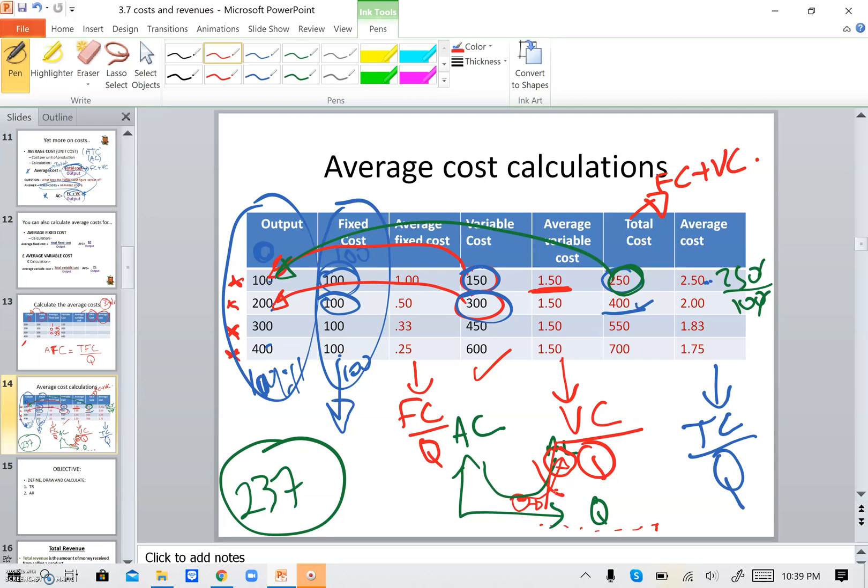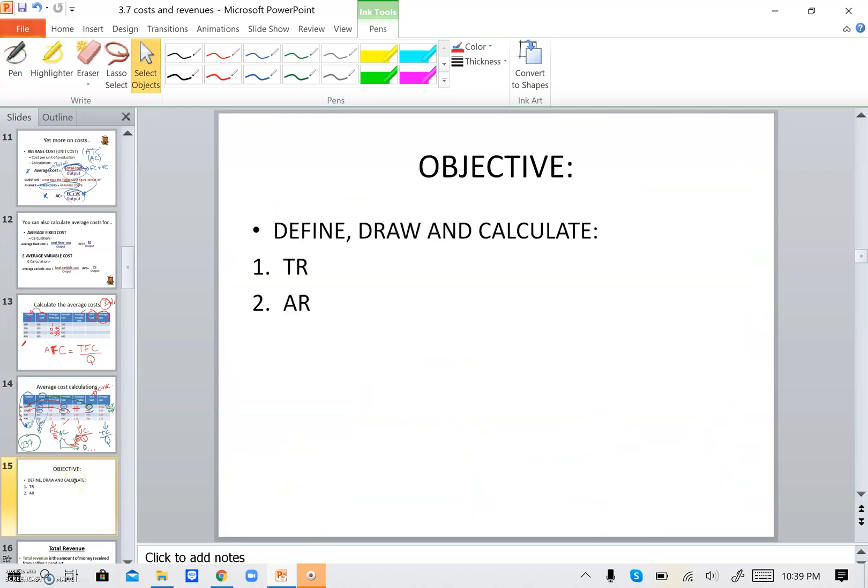Now, I will start with 3.7.3, and it would be on page 238. We will explain total revenue and average revenue.